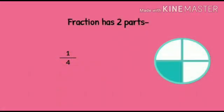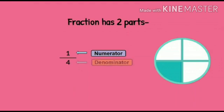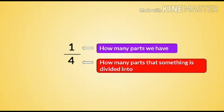A fraction is denoted by two numbers — one above and one below — and there is one horizontal line that separates them. The top number is called the numerator, and the bottom number is called the denominator. The denominator means how many parts there are altogether. The numerator means how many parts we are talking about.